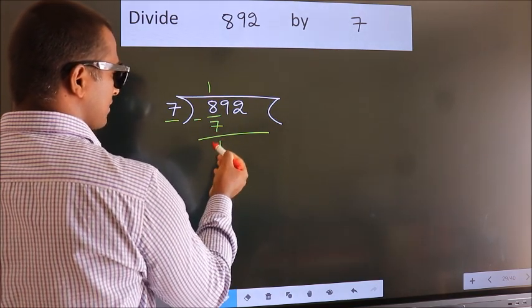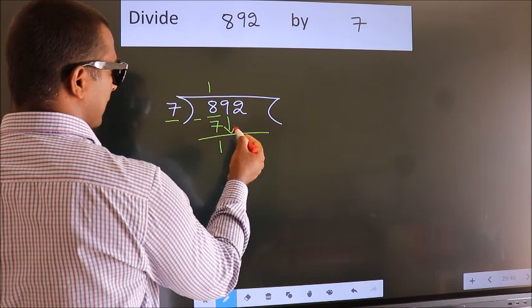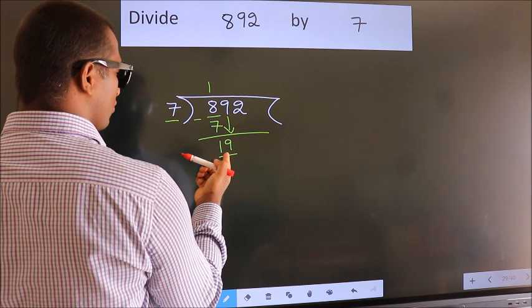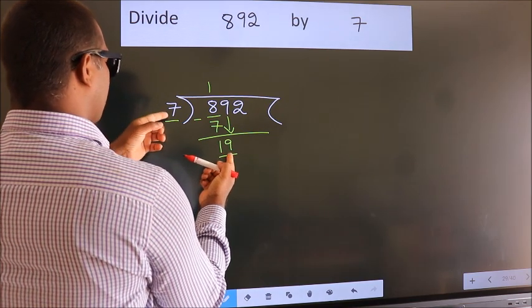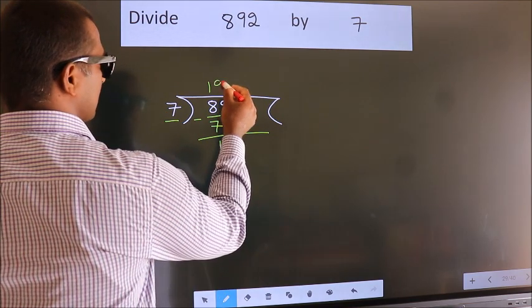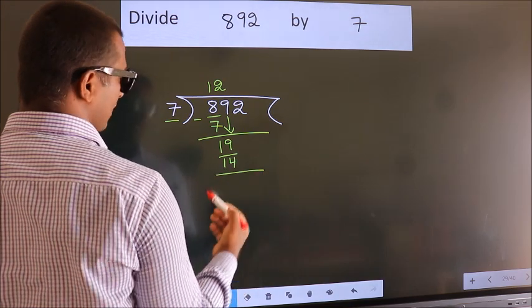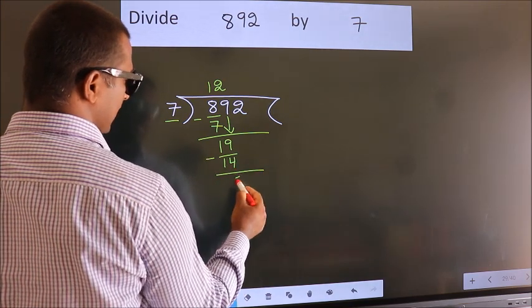After this, bring down the beside number. So 9 down. So 19. A number close to 19 in 7 table is 7 twos 14. Now we subtract. We get 5.